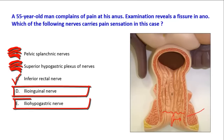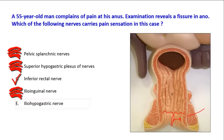The ilioinguinal and iliohypogastric nerves, options D and E, are wrong. They are somatic nerves that carry pain sensation, but not from the anal canal — they are located anteriorly. The ilioinguinal is derived from L1 of the lumbar plexus, and the iliohypogastric is a collateral branch. They both supply the lower part of the abdominal wall with somatic innervation.